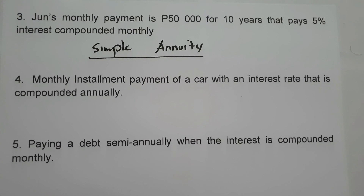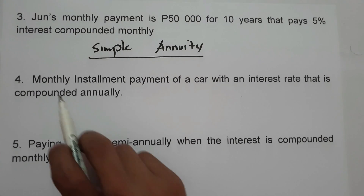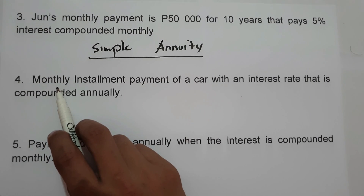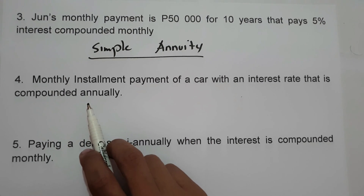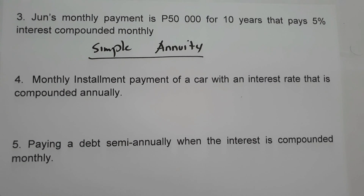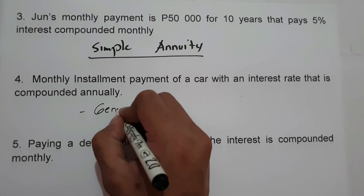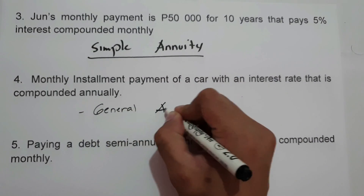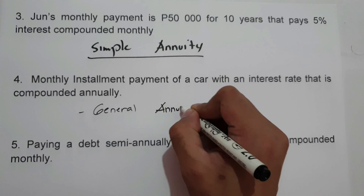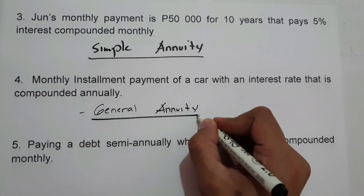On example number four, monthly installment payment of a car with an interest rate that is compounded annually. The payment interval is monthly, which is not equal to the compounding interval which is annually. Therefore, the given situation represents general annuity.